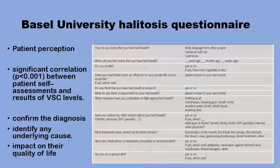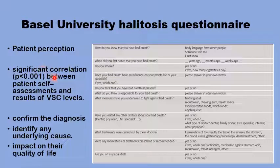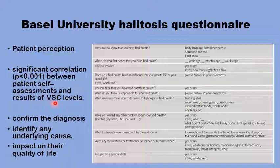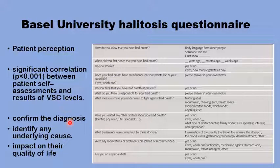This is the first step in the assessment of halitosis patients: evaluating the patient's own perception of their condition. There is a very good reason for this, because there is a very strong correlation between the patient's self-assessment and the objective results obtained from machines, like analyzing the volatile sulfur compounds levels in the patient's breath. The patient's own perception helps in confirming the diagnosis, identifying any underlying cause, and determining any impact of the condition on their quality of life. Several questionnaires are used.